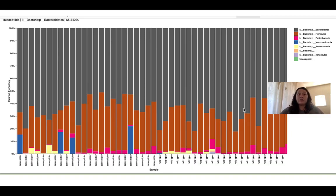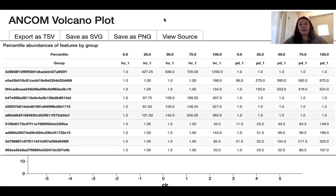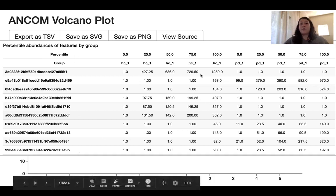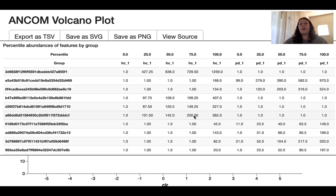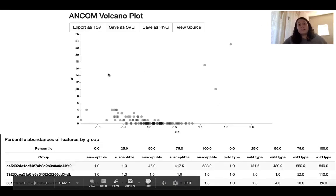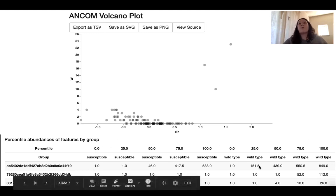Looking at ANCOM and random forest classification, we were able to see that there were unique ASVs between the healthy mouse and the Parkinson's mouse. We were also able to see that there were unique ASVs that differentiated the microbiome of the susceptible mouse and the wild type mouse.